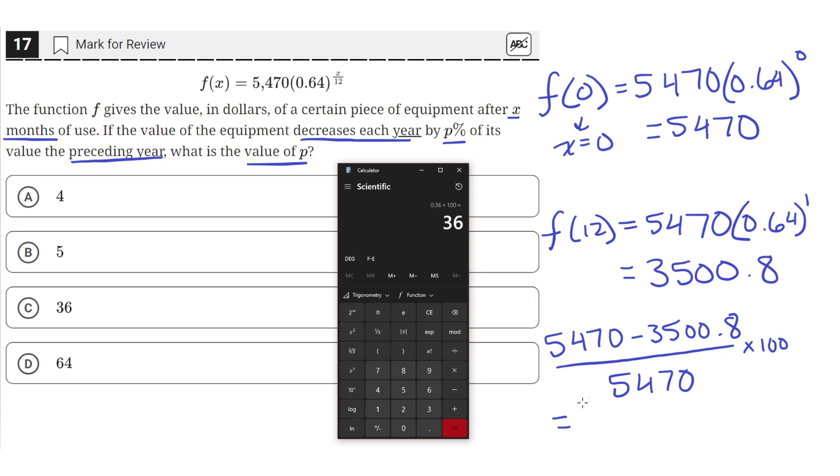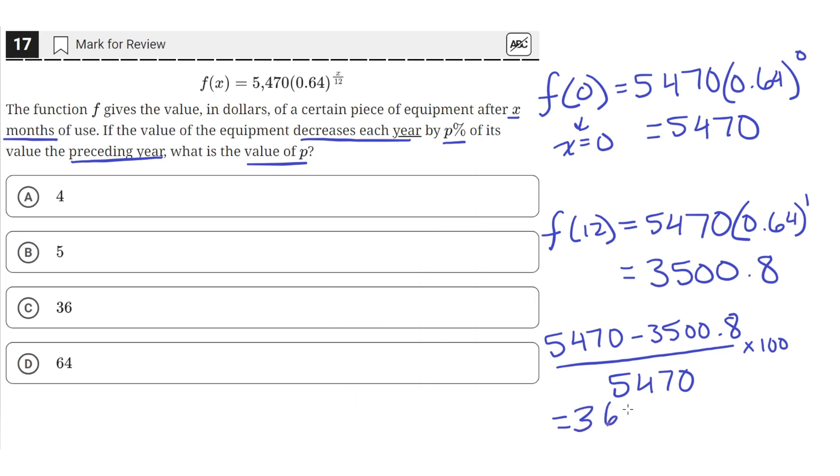So we get that the percentage change going from year 0 to year 1 was 36%. So P, that means P is equal to 36, since the value decreased by 36% going from year 0 to year 1. So that's answer choice C.